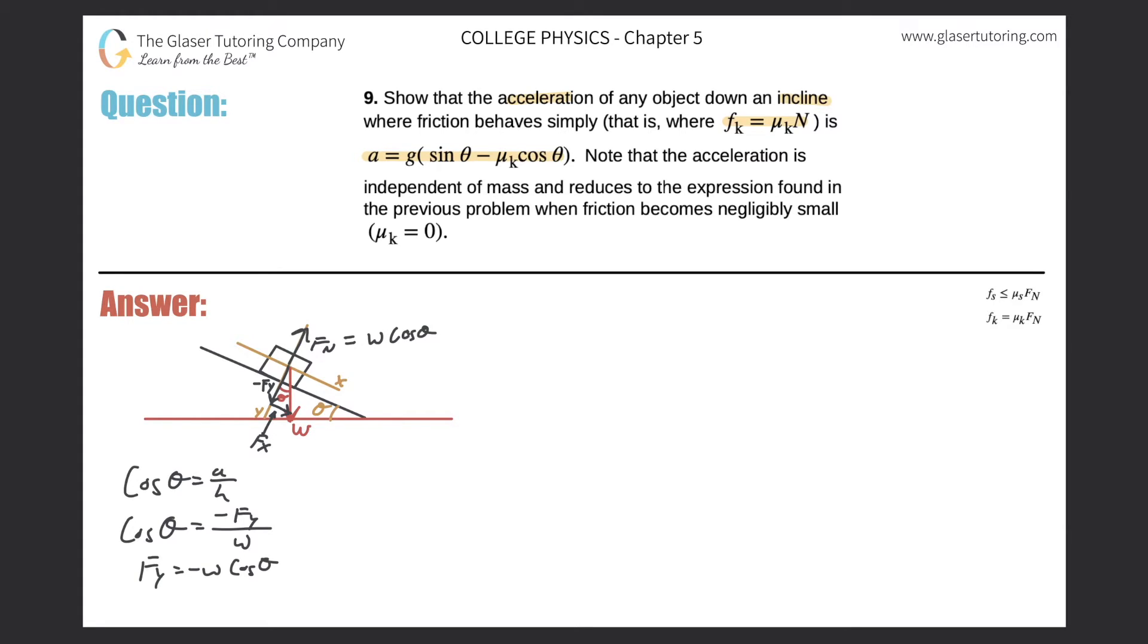Wonderful. Now how do I find finally this frictional force here that's pointing back, that's opposing the natural motion of this object? We are considering that this object has an acceleration down the slope, and that's what we don't know.